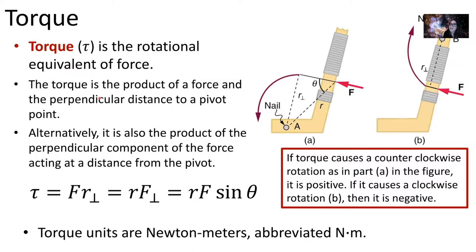Torque is the rotational equivalent of a force. The symbol I'll use is the Greek letter tau — a fancy T. Torque is the product of a force and the perpendicular distance to a pivot point. Alternatively, torque equals the perpendicular component of the force acting at a distance from the pivot. So torque = F times the perpendicular distance, or torque = distance times the perpendicular component of force, or torque = r × F × sin(θ), where θ is the angle between the radial line from pivot to force and the direction of the force.